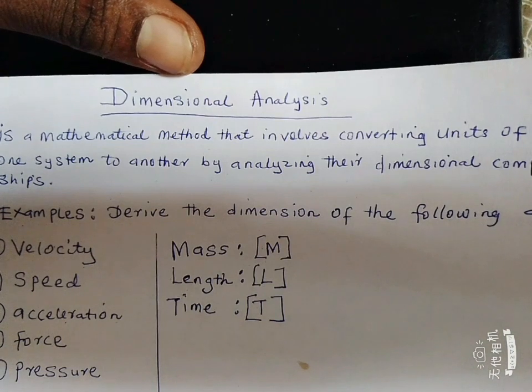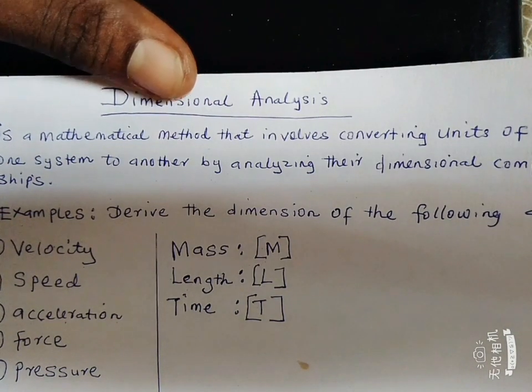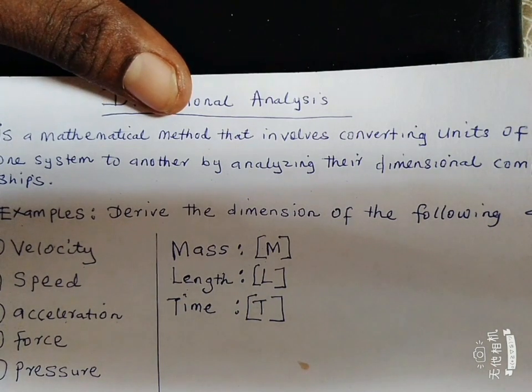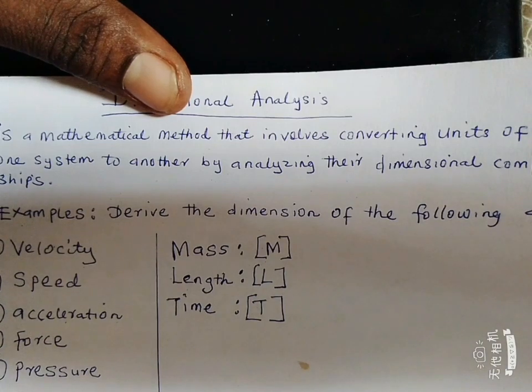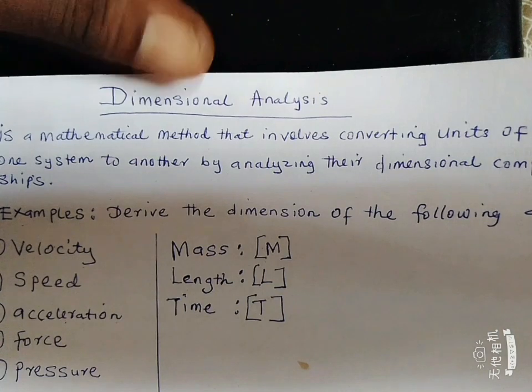That is the three main basic quantities we have in physics. We also have other basic quantities like the temperature, the amount of substance, the luminous intensity, etc. But these are the three main basic quantities that we encounter every time on the course of studying quantum mechanics.